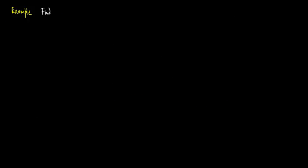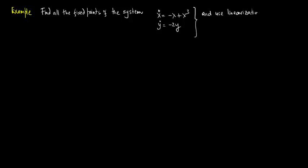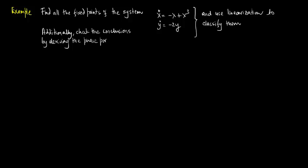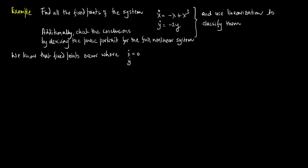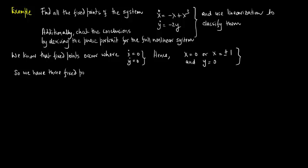Let us consider an example. Find all the fixed points of the system x-dot = −x + x³ and y-dot = −2y, and use linearization to classify them. Also check by deriving the phase portrait for the full nonlinear system. The fixed points occur where x-dot = y-dot = 0, giving x = 0 or x = ±1. So we have three fixed points: (0, 0), (1, 0), and (−1, 0).